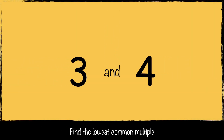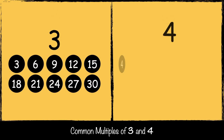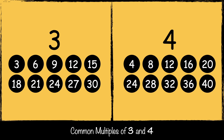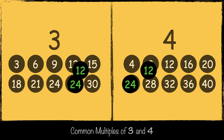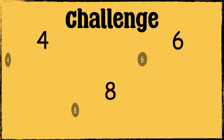Let's have a look at one more example. We're going to find the lowest common multiple of three and four. Here are some of the multiples of three and some of the multiples of four. What multiples do they both have? 12 and 24. So the lowest common multiple of three and four is 12.